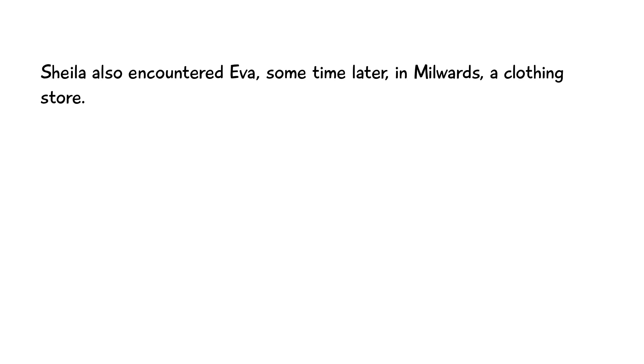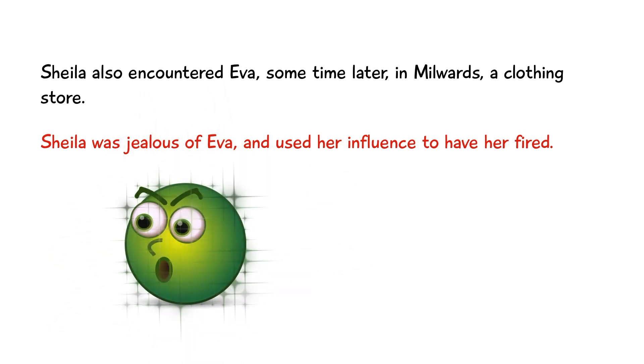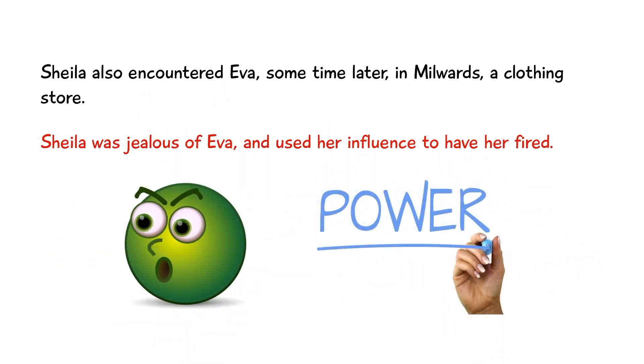We then learn that Sheila also encountered Eva while she was working in a new position at a clothing store called Milwards. Sheila was jealous of Eva and used her influence to have her fired from the store. It's clear that Sheila feels incredibly guilty about this because she gets very upset when she realises what she's done.